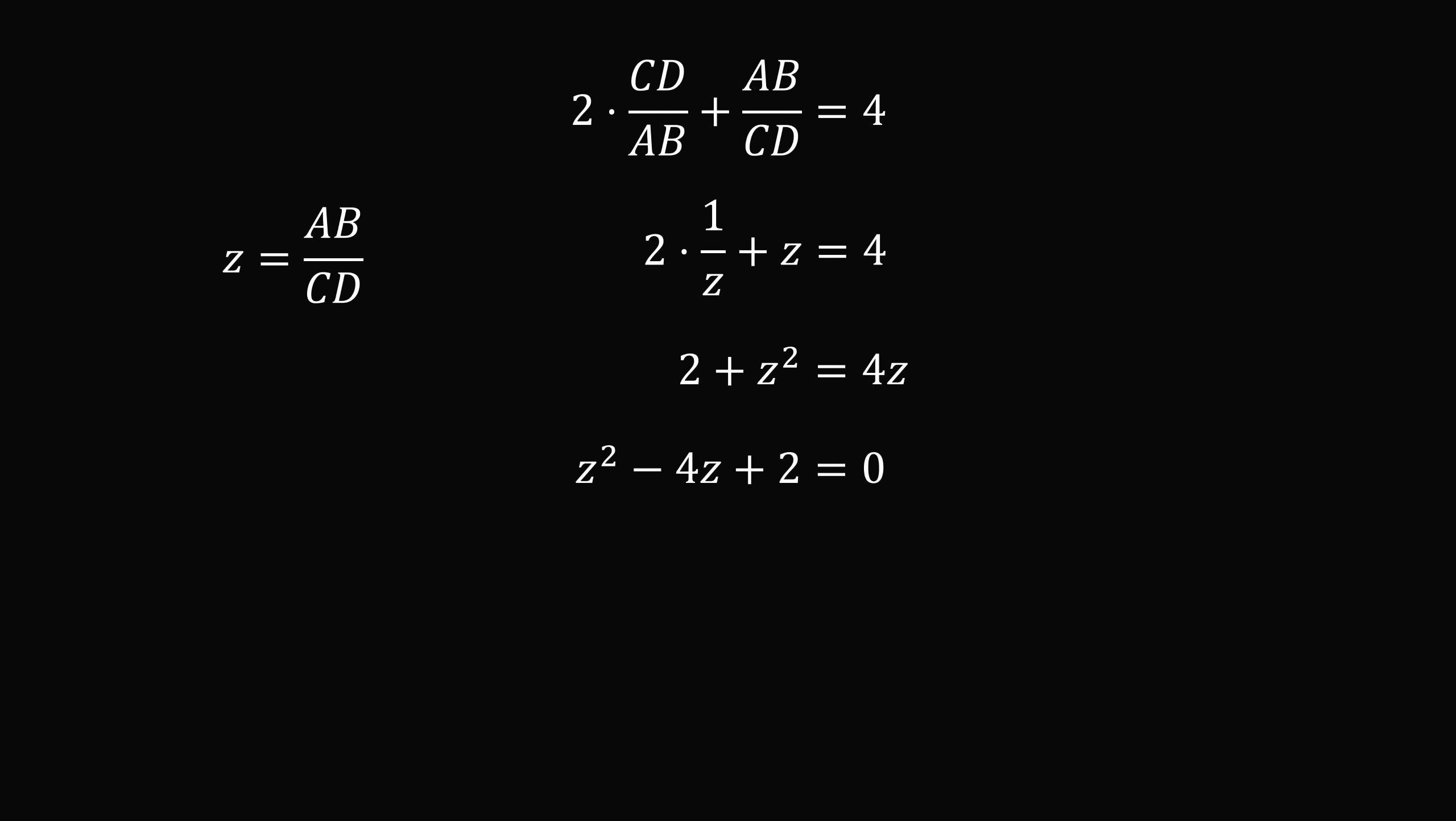We have z squared minus 4z plus 2 is equal to 0. We can solve this quadratic equation and we get 2 possible values for z.